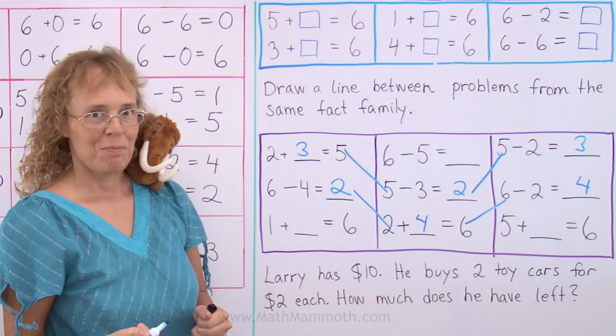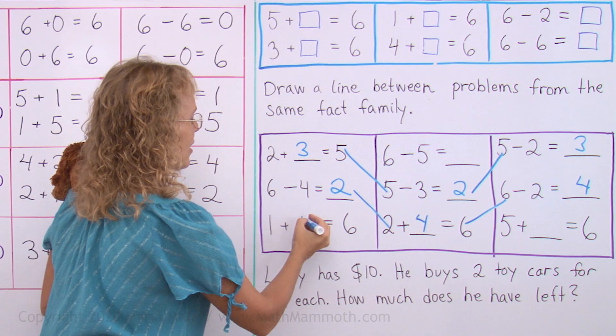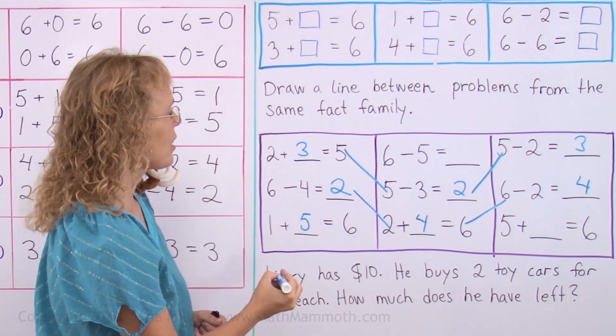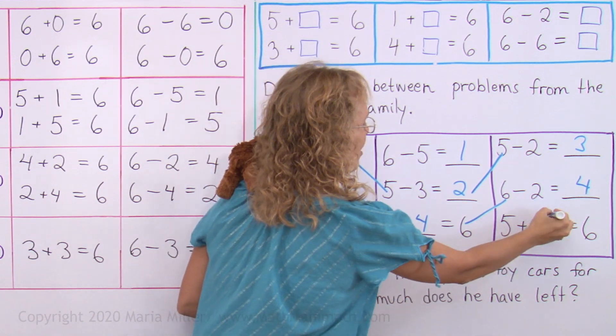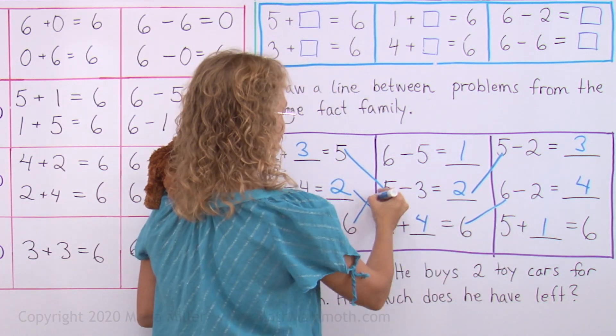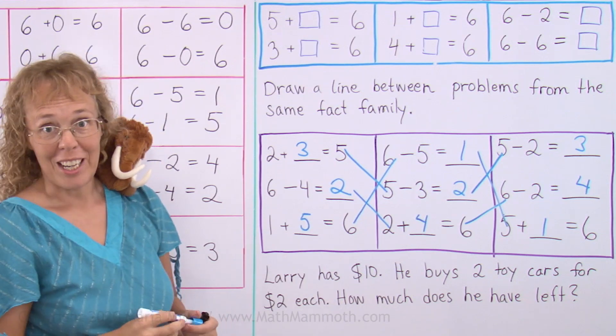And lastly, we just have one plus five equals six. And six, five and one. Five, one and six. Those ones. All done.